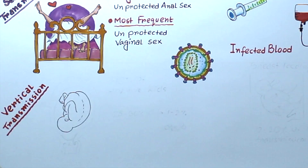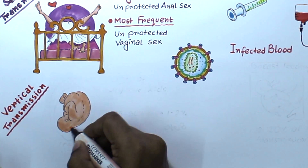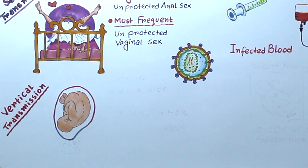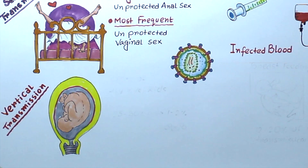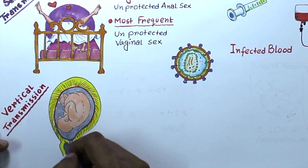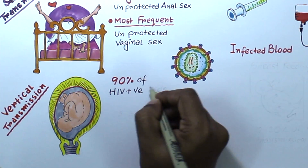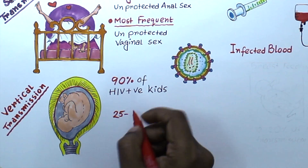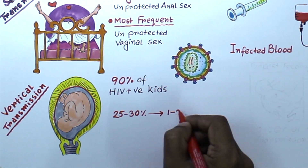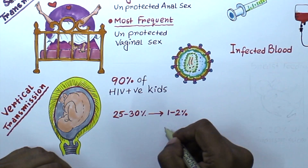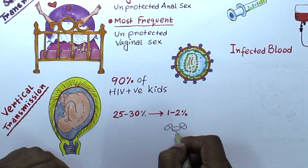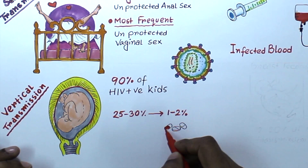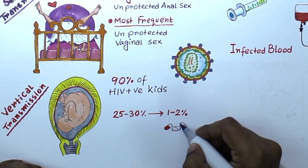The next mode of transmission is from an HIV-infected mother to her baby, also called vertical transmission. Ninety percent of HIV-positive children got their infection during birth. Nowadays, the use of antiretroviral medications reduces the risk significantly — from 25 to 30 percent transmission without medication down to one to two percent with medication, which is almost a 20-fold reduction.